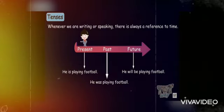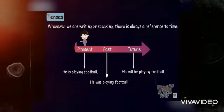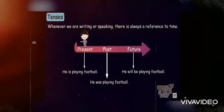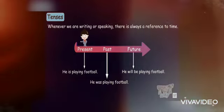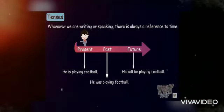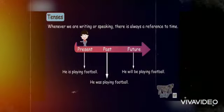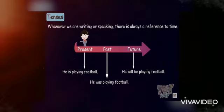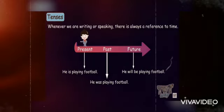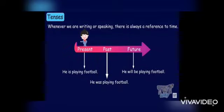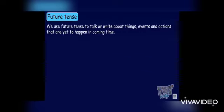Whenever we are writing or speaking, there is always a reference to time. Present: 'He is playing football' — so it's happening in present time. Past: 'He was playing football' — it has happened in the past. And future: 'He will be playing football tomorrow' — it's going to happen in the future.